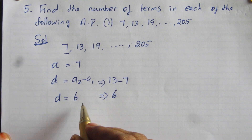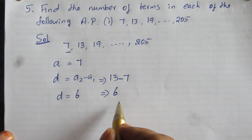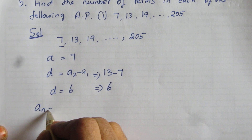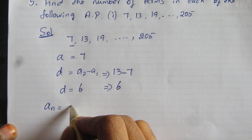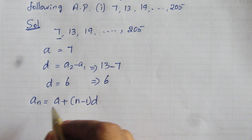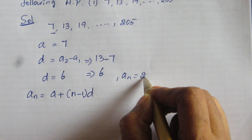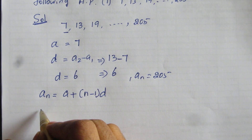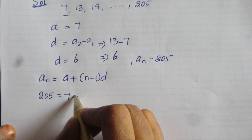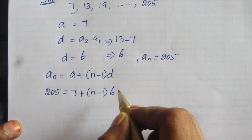Now, let there be N terms in this AP. We have to find N. We know that Aₙ equal to A plus (N minus 1) into D. Here Aₙ is equal to 205, so 205 equal to 7 plus (N minus 1) into 6.